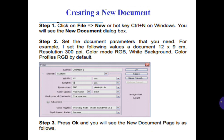Creating a new document. Step number 1: click on File and then New, or use the hotkey on Windows. You will see the new document dialog box. Step number 2: set the document parameters that you need.